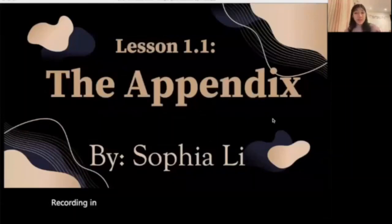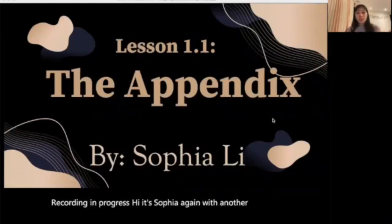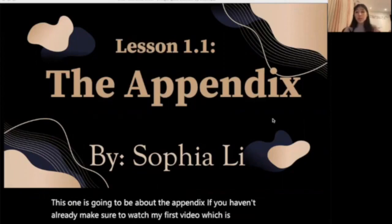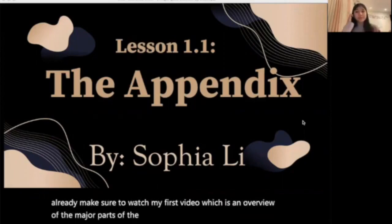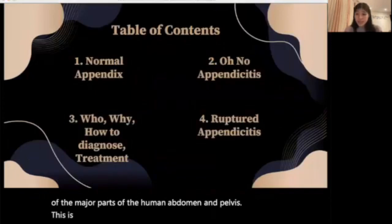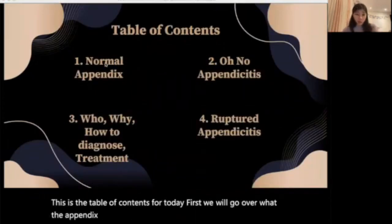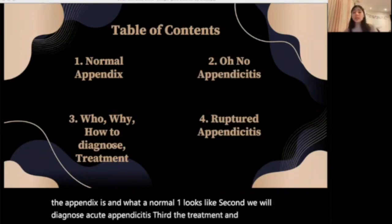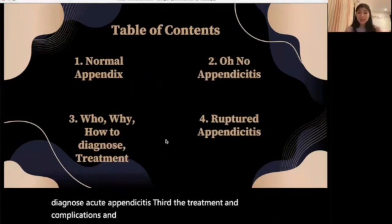Hi, it's Sophia again with another video. This one is going to be about the appendix. If you haven't already, make sure to watch my first video, which is an overview of the major parts of the human abdomen and pelvis. This is the table of contents for today: first we will go over what the appendix is and what a normal one looks like, second we will diagnose acute appendicitis, third the treatment and complications, and finally ruptured appendicitis.